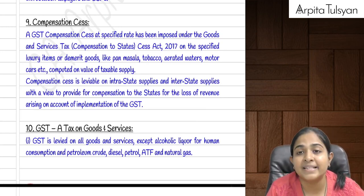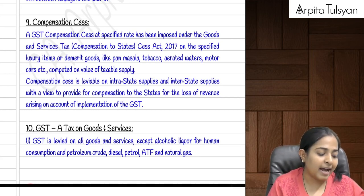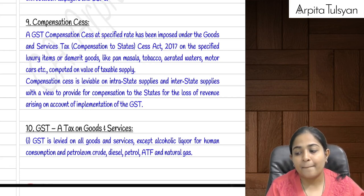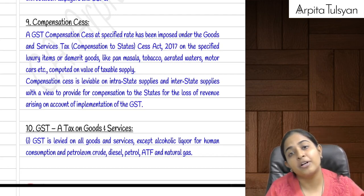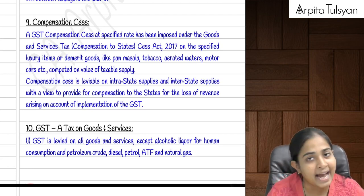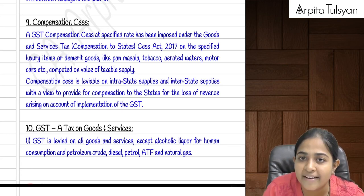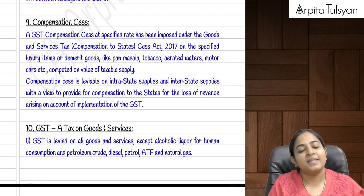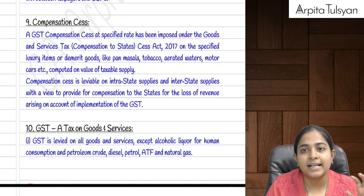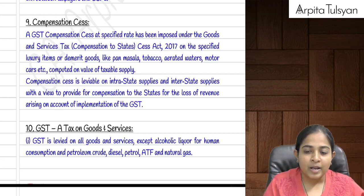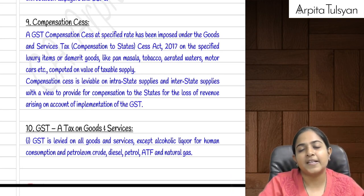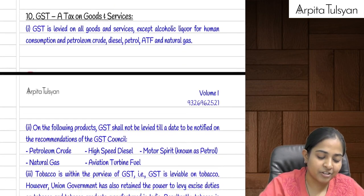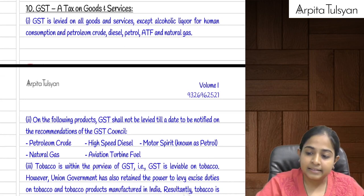Regarding the Compensation Cess Act: earlier the power to levy taxes on goods was only with the states. Now under GST this power is being given to both center and state, so the states will lose some revenue. To compensate the states, a compensation cess is levied on certain products — those whose sales India doesn't want to promote, like pan masala, tobacco, and other luxury products. This revenue will belong to the states.